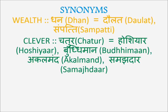Examples for clever: 'Woh bada hi chatur ladka hai' — he is a very clever boy. 'Usko tum buddhu nahi bana sakte ho' — you can't make him a fool. 'Woh bada hi buddhiman hai' — he is very clever. 'Samajhdaar ko ishara kaafi hota hai' — a clever person does not need to be explained; a small hint is enough for him.